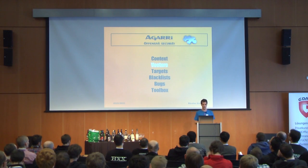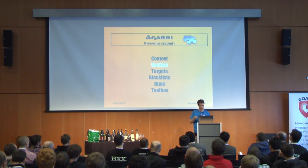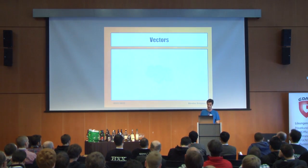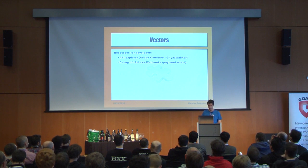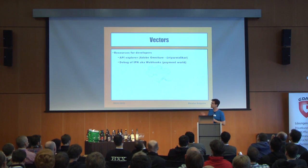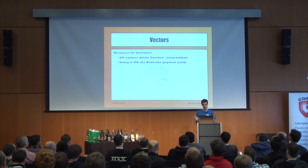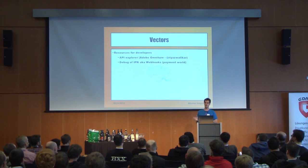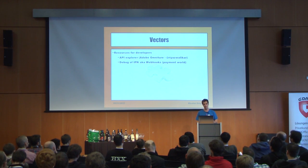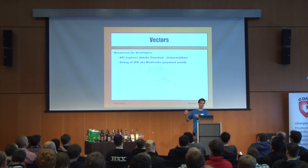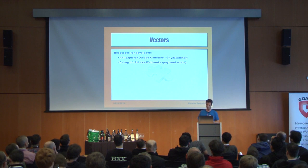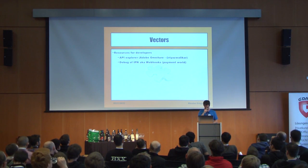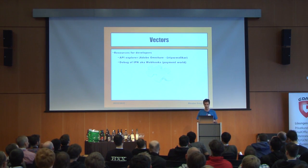Vectors are features we are looking for in our target applications. This is very common — resources for developers. Plenty of websites allow you, as a developer, to register and do specific stuff. For example, Adobe provides an API Explorer where you can decide which endpoint you want to reach — a perfect vector. Now it's whitelisted, so it's not exploitable anymore in my opinion.